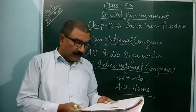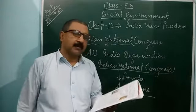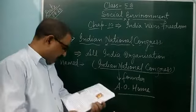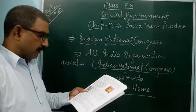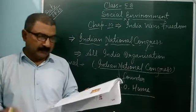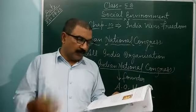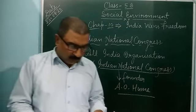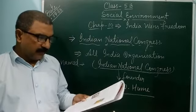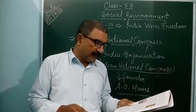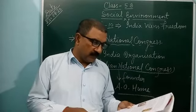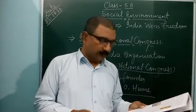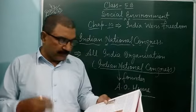The first session of the Congress commenced on 28th December 1885 and continued for three days, with two chief demands from the Indian people. First, local self-government at lower levels — meaning Indians should also participate in local governments. Second, opening higher courts for Indians as well, meaning Indians could also access the higher courts, which was not the case before. The British rulers did not accept these demands.